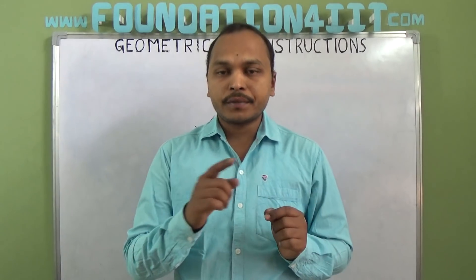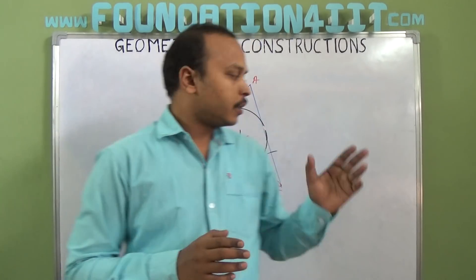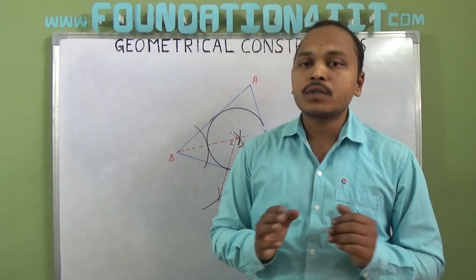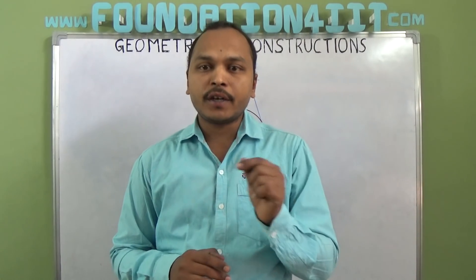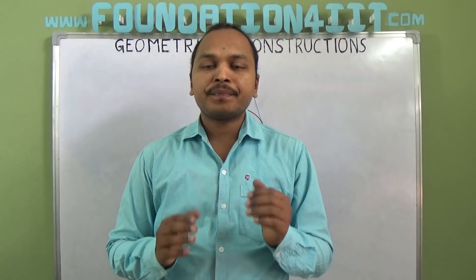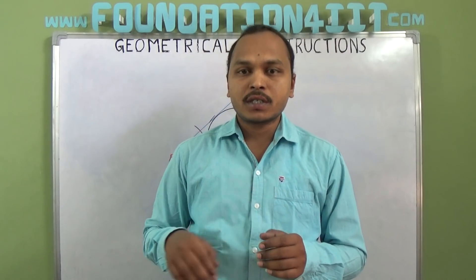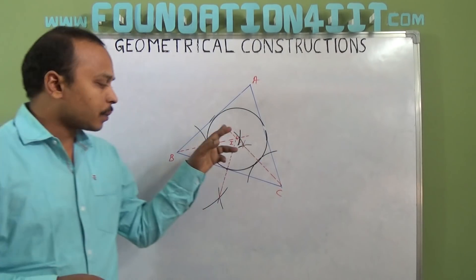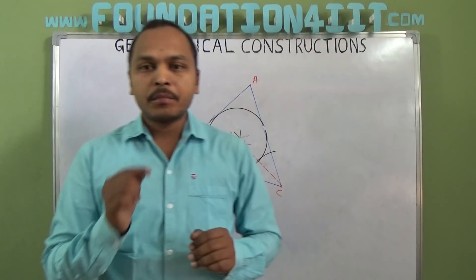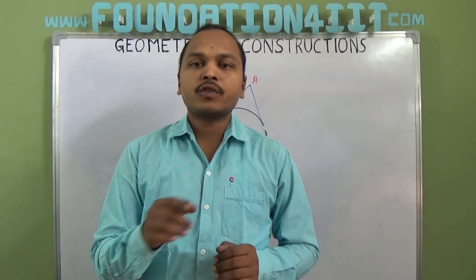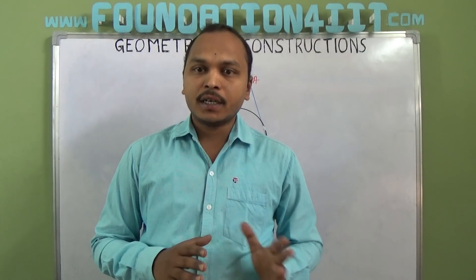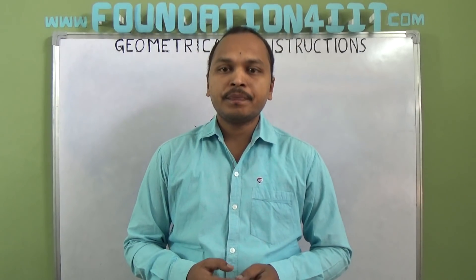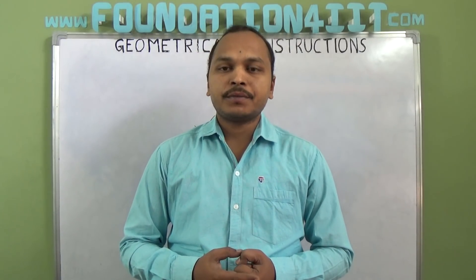So, the incircle is constructed by bisecting any two angles of the triangle. Where the two bisectors intersect is the incenter. Using that as center and drawing a perpendicular to find the radius, you can draw the incircle that touches all three sides. The steps of construction are given in the link in the description below.